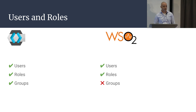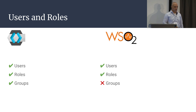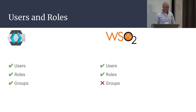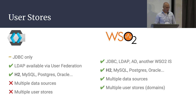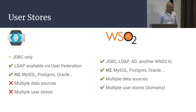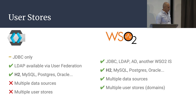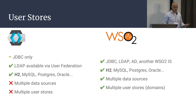Users and roles are a fundamental concept for identity managers, so obviously both are well supported. KeyCloak also has the notion of groups, which allow you to assign attributes to multiple users. Next up is user stores — a component that allows you to persist users and roles. Both servers are out of the box configured to use the embedded H2 database, but they both discourage you from using that in production. KeyCloak offers only one persistence option and a single data source, while WSO2 allows you to configure as many data sources as you like.